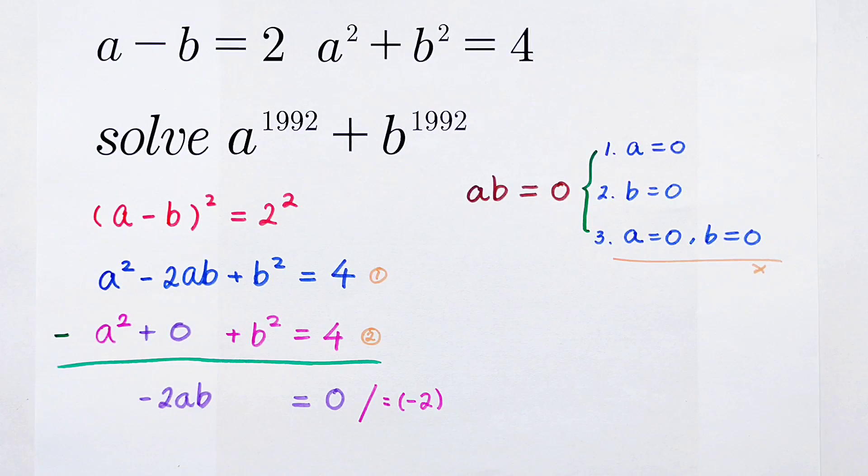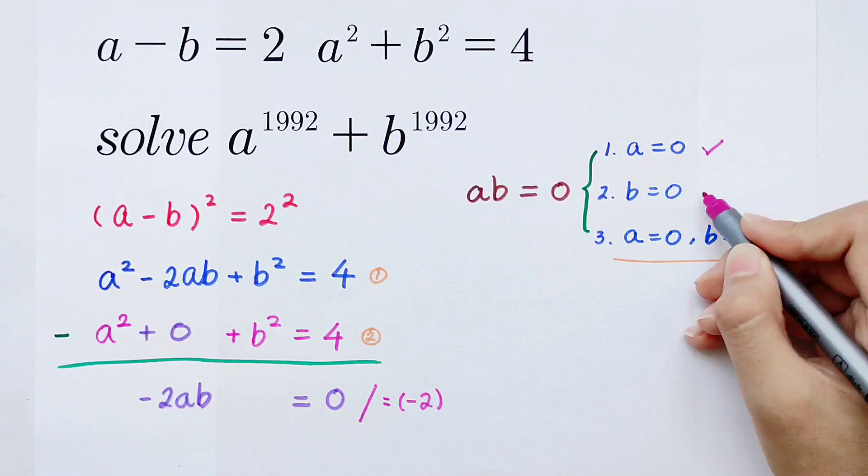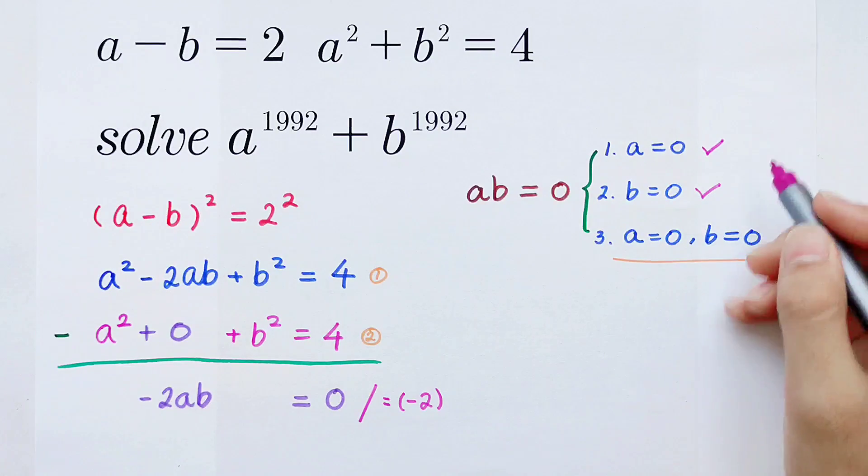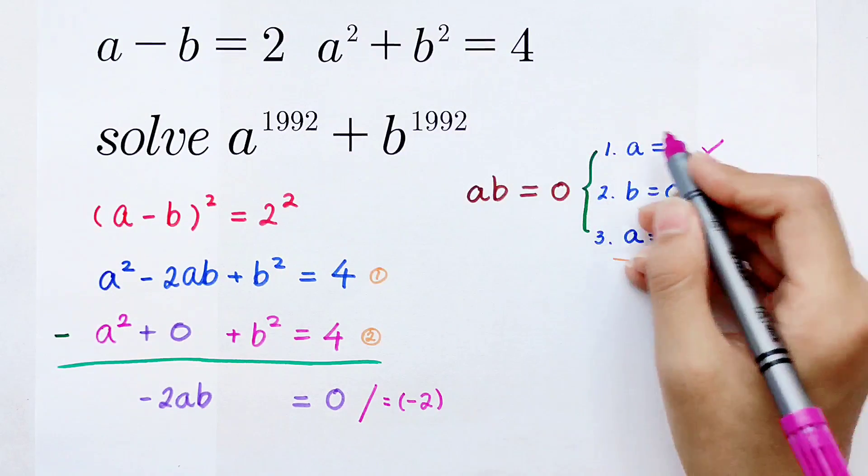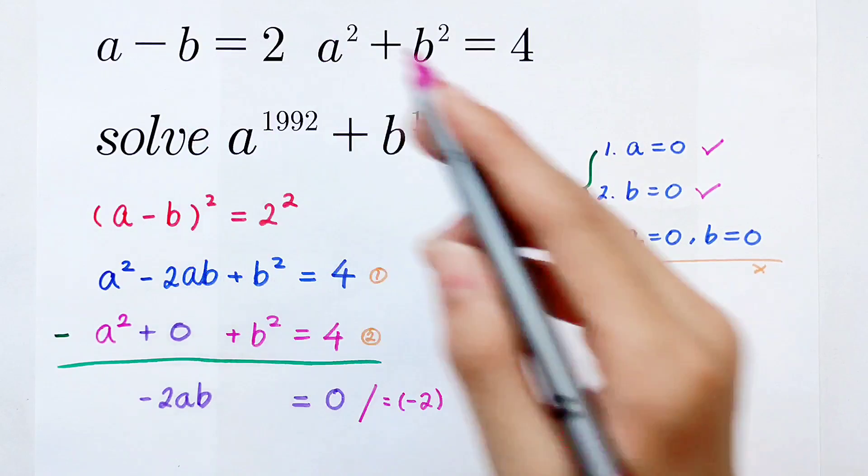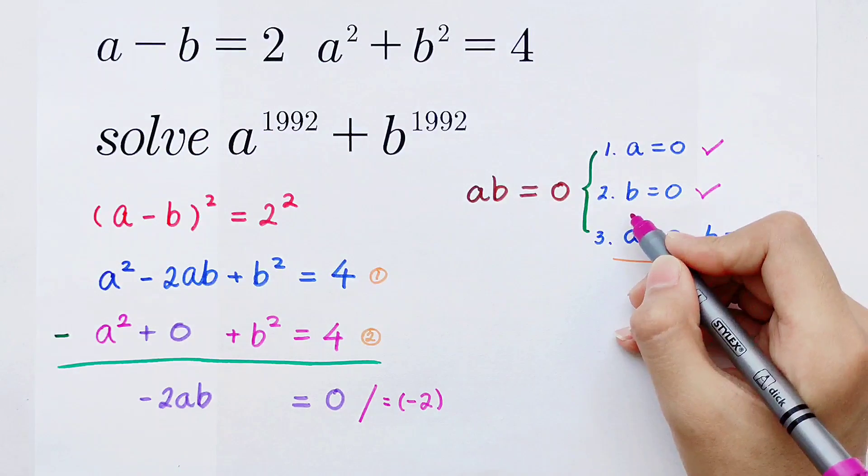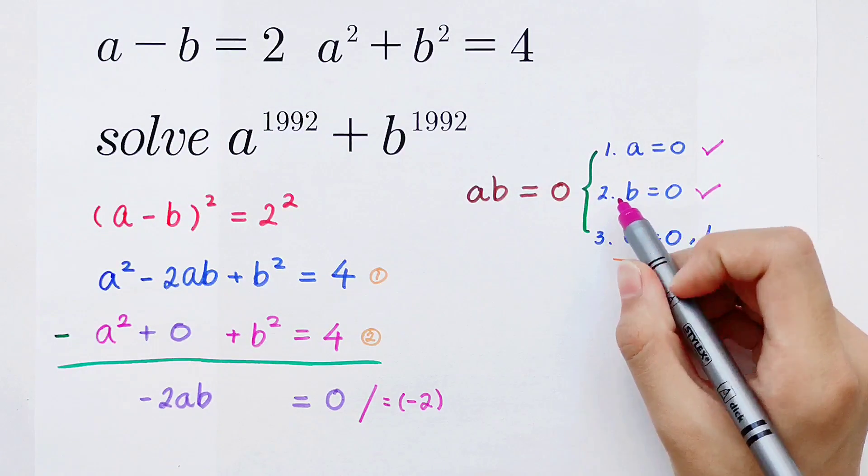The first one is right, the second one is also right. If a is equal to 0, from a minus b is 2, we can get b is minus 2. And a² plus b² is 4, it is right.